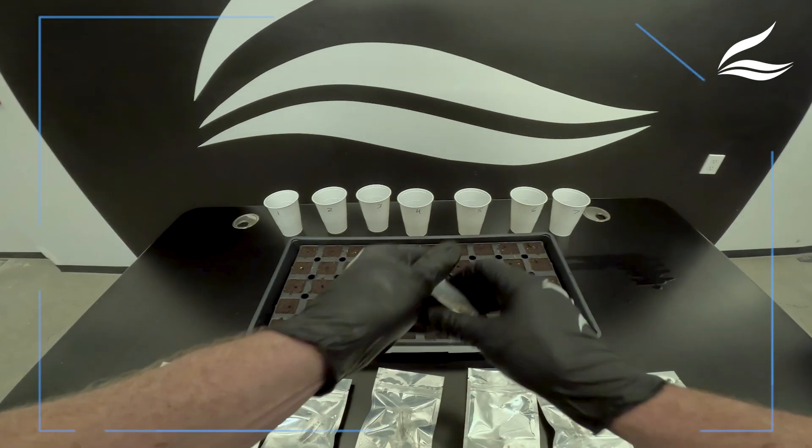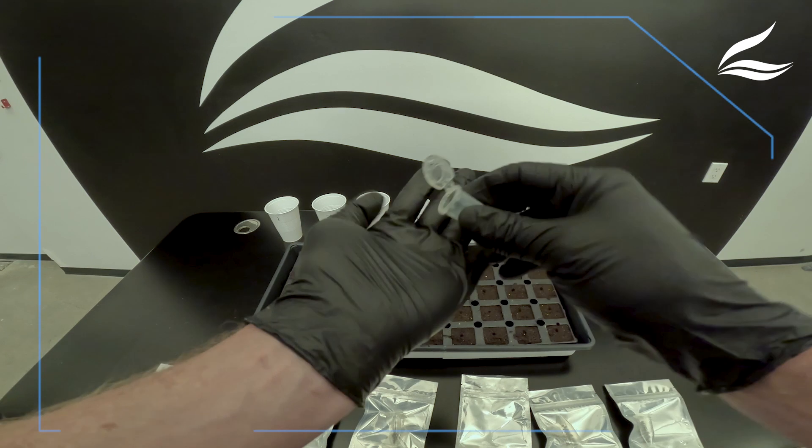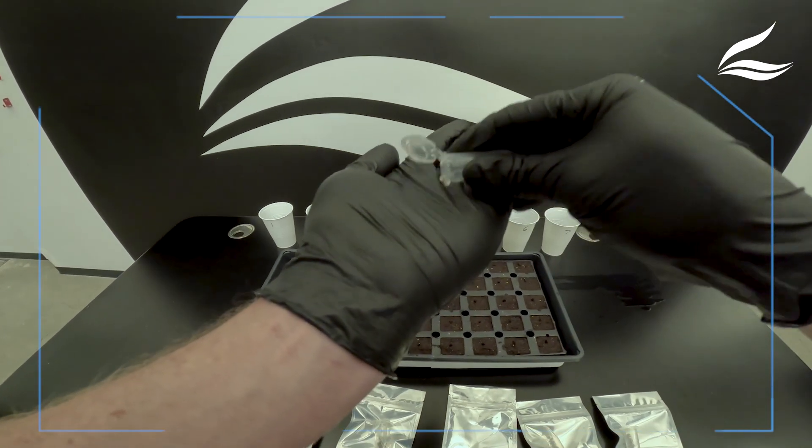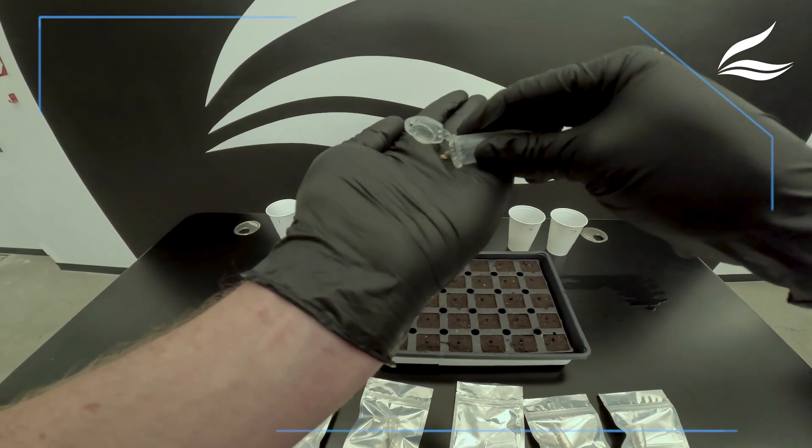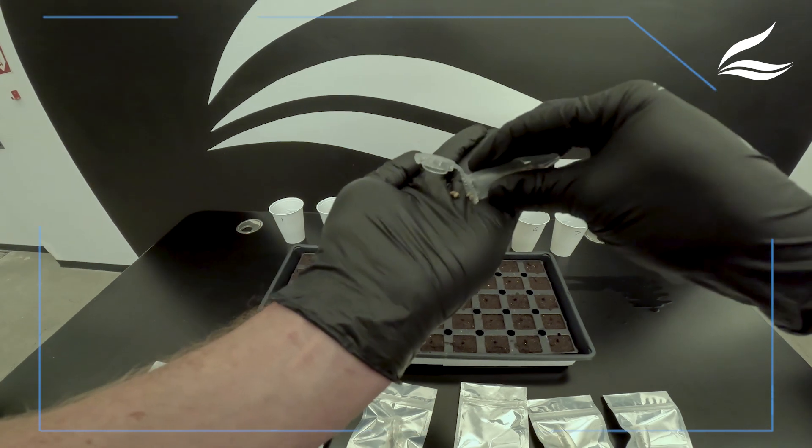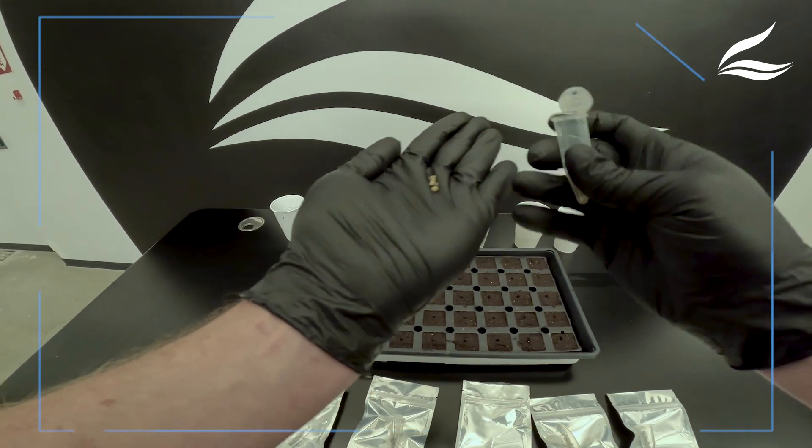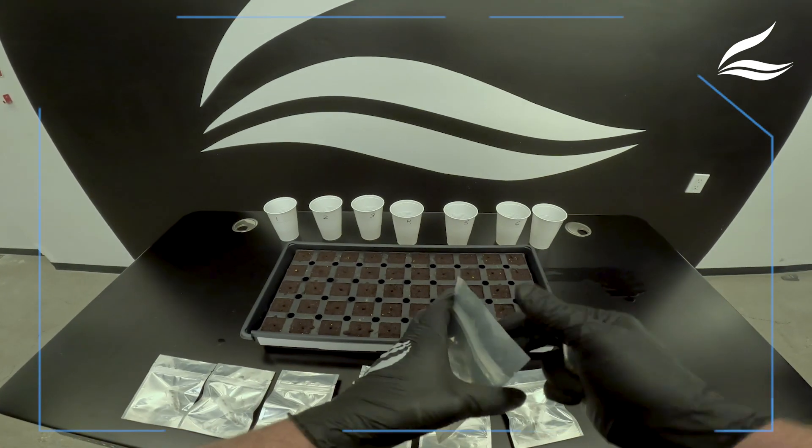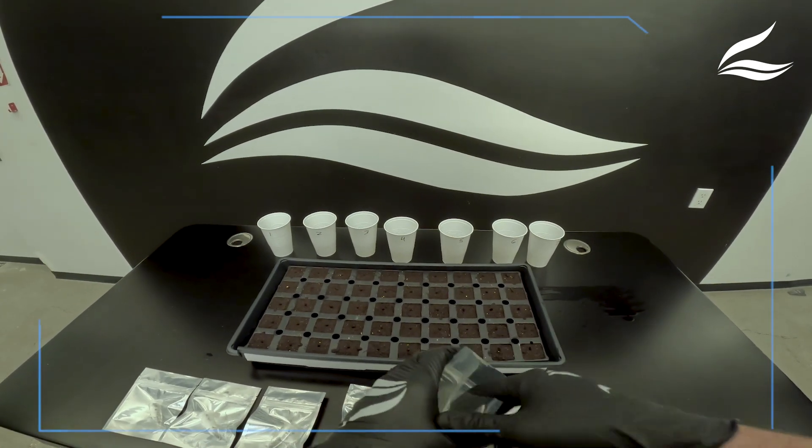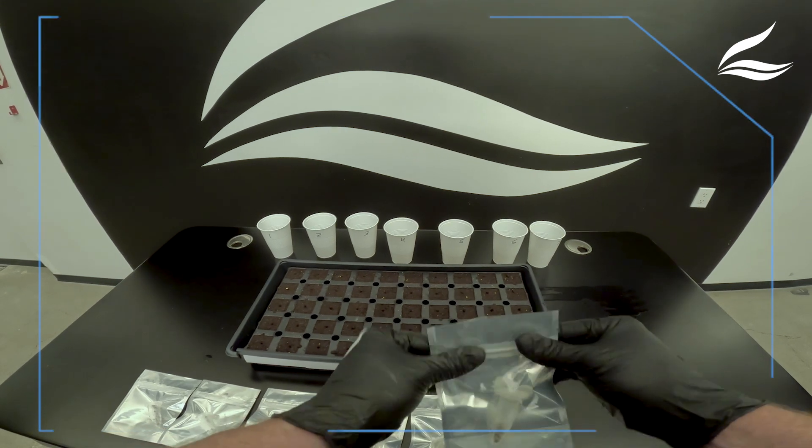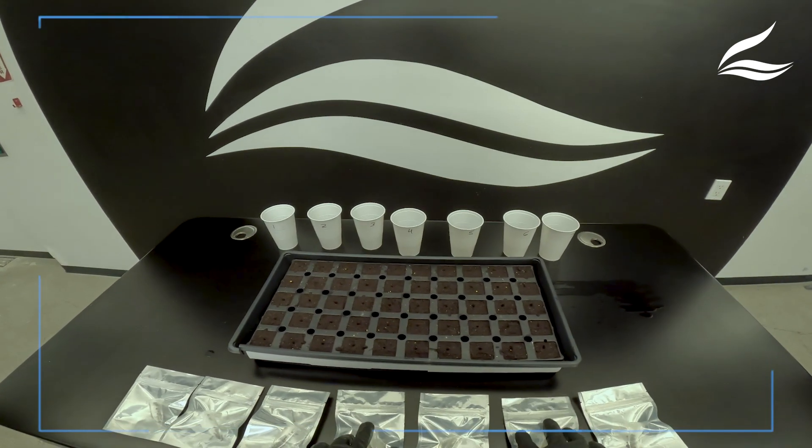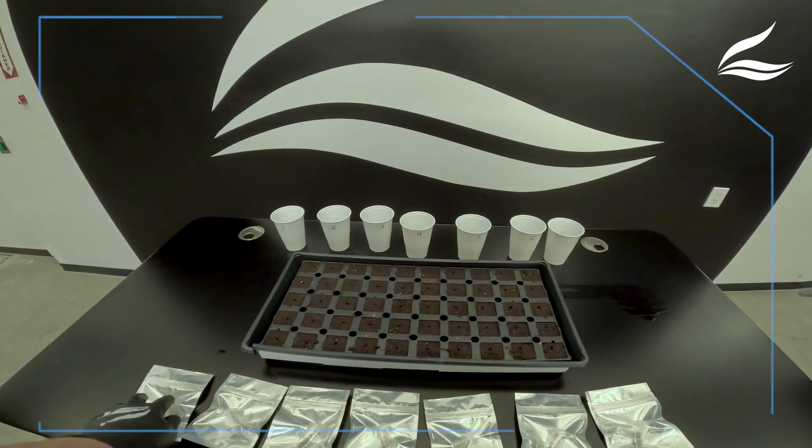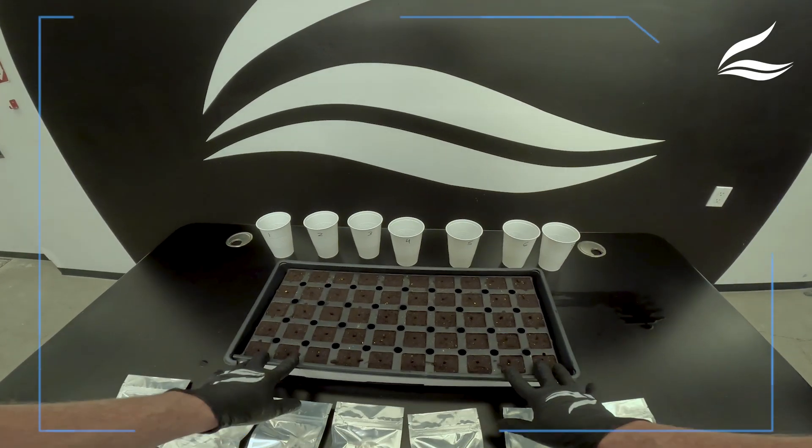Always important to label everything, because when you're doing seven different genetics in the same tray, everything needs to be labeled. If not, you're going to mix everything up and not know what's what. Now that our seeds are soaking in the water, we're going to let them sit overnight for about 24 hours until they all start to open up, and then we're going to be putting them into the tray.